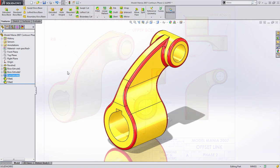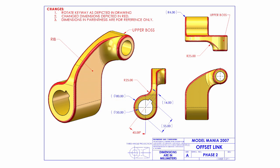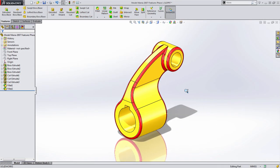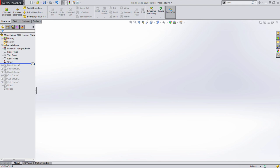Now let's look at how the Phase 2 changes affect this part. When we look at the Phase 2 drawing, we can see that the part has changed drastically — everything we kept in the center has been shifted over to the right side. We can approach this by rolling back to the beginning of the part and tackling changes feature by feature. The first base boss feature won't be affected, but the next one will.